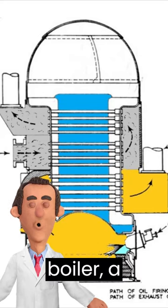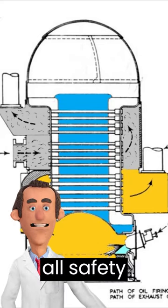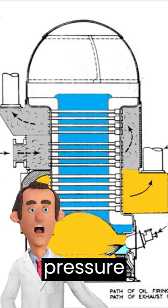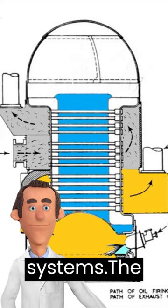Before starting the boiler, a thorough inspection should be conducted to ensure that all safety devices are in proper working order, including the safety valves, pressure gauges, and flame detection systems.